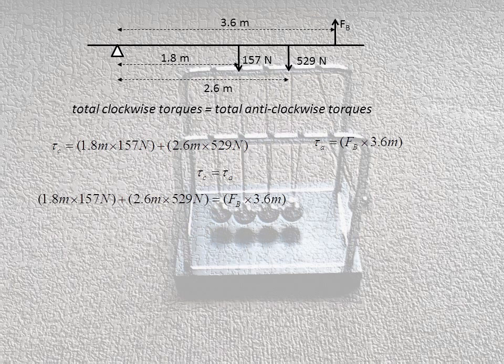I put these two equations together, TC and TA here, and now all I have to do is simplify and rearrange. So simplify this stuff on the left, and I get 1658 newton meters equals force of B times 3.6, and I move 3.6 to the other side and divide it, and I can work out the force of B. Force of B equals 460 newtons.